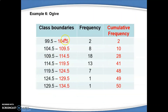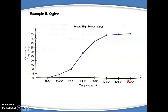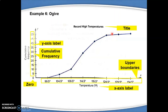For the ogive, we need the upper boundaries and the cumulative frequency, then you will get the ogive. Don't forget the important elements such as the title, the upper boundaries on the X axis, the cumulative frequency on the Y axis, and your 0.